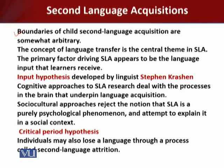We also have to take into account children who are acquiring two or more languages simultaneously. It is generally agreed that child second language acquisition extends from about five to nine years, or after the primary language is essentially acquired but before any possible effects related to the critical period.